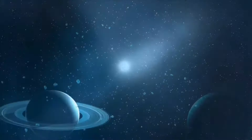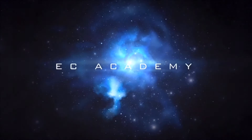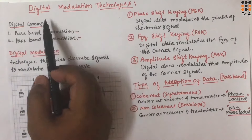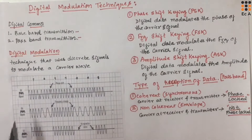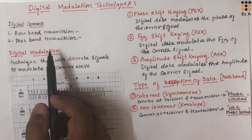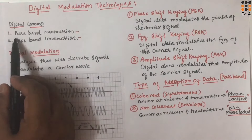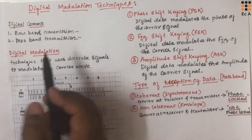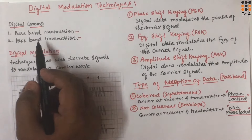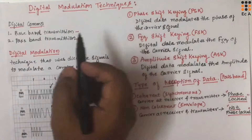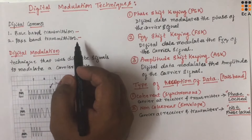Hello friends, welcome to EC Academy. In this lecture, let us understand the introduction to Digital Modulation Techniques. In digital communication, there are basically two types of transmission of digital signals. First one is baseband transmission and second one is passband transmission. In baseband transmission, the digital data is transmitted over a channel directly, which means there will be no carrier signal and there will be no modulation.